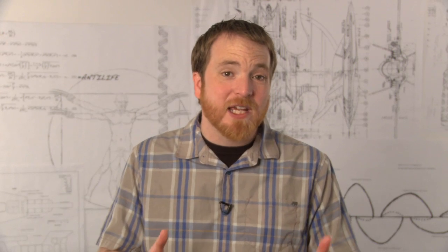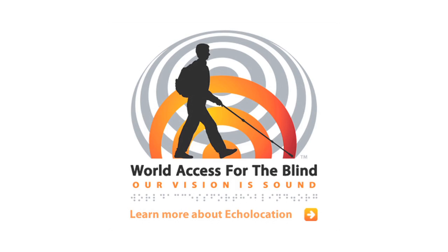When Daniel Kish talks about something in front of him, he sometimes says things like, look at this. He puts things in visual terms, because his echolocation allows him to see the world. He's taught this technique to over 500 people as part of his not-for-profit organization, World Access for the Blind. And I have to admit, I'm impressed by both his efforts and his results. But I also remain wary.